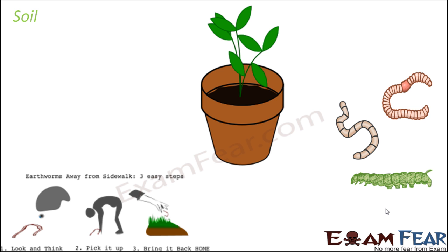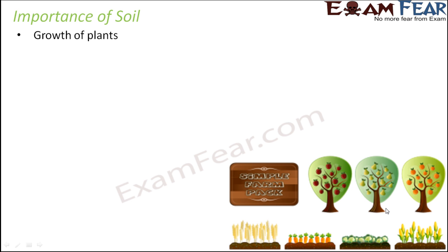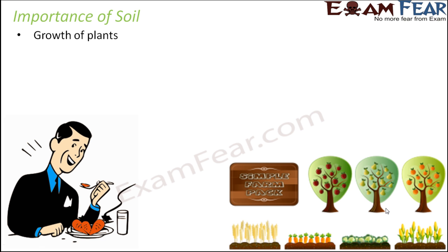Soil is also home for a lot of living organisms like earthworms, tiny insects, and a lot of creatures that live within the soil. So soil is extremely important first for the growth of plants, because plants receive their minerals, nutrients, and water from the soil. All other organisms depend on plants for their food either directly or indirectly.